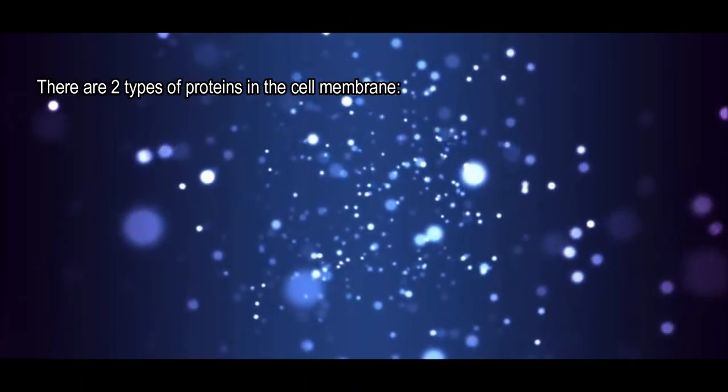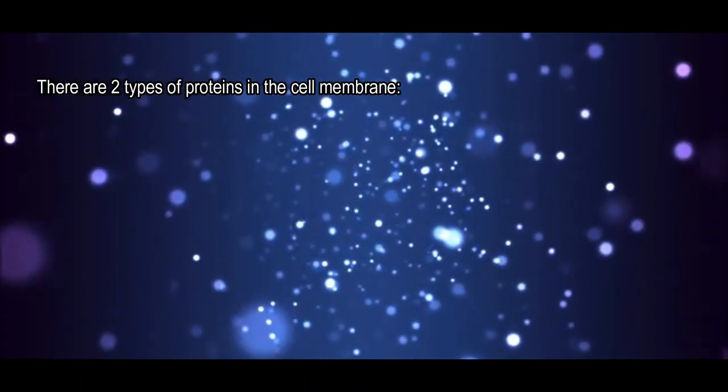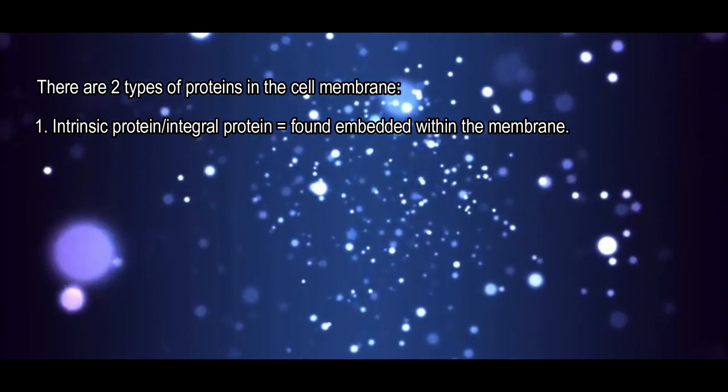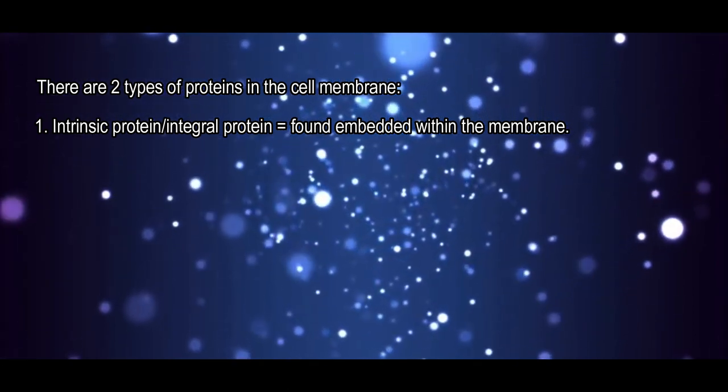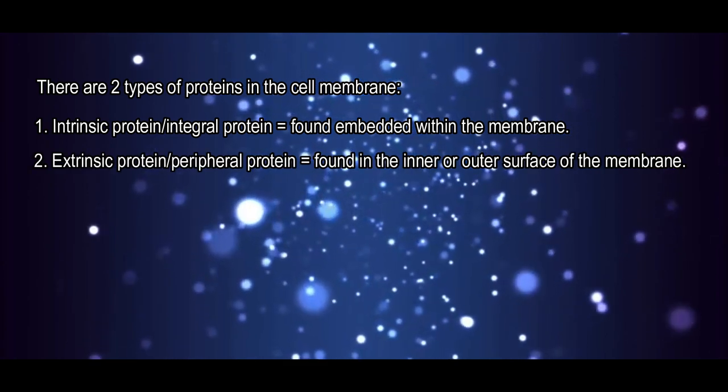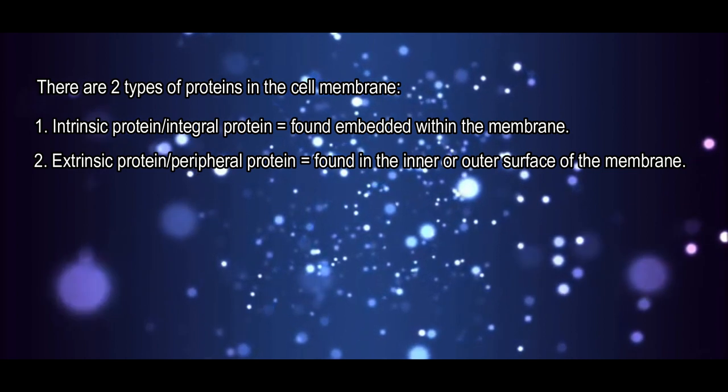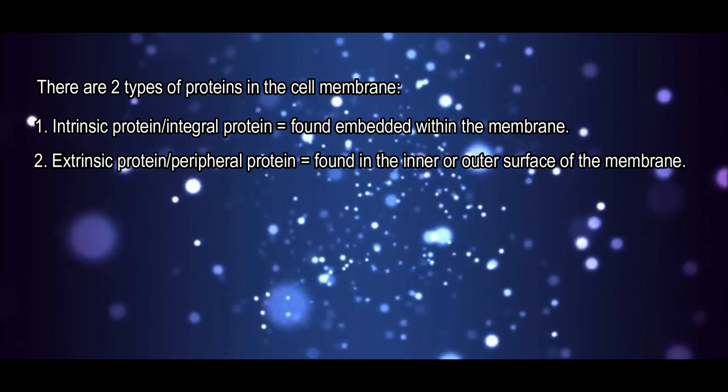There are two types of proteins in the cell membrane. First, intrinsic proteins or integral proteins, which are found embedded within the membrane. Second, extrinsic proteins or peripheral proteins, which are found on the inner or outer surface of the membrane.